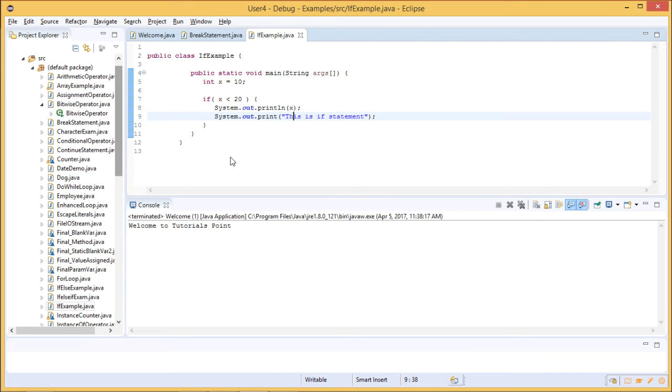It will not repeat the value or increment the value because we have not provided any condition. In order to increment or display the incremented value we use the for loop. Here we are just checking if the condition is met or not. Let us save this file and run.